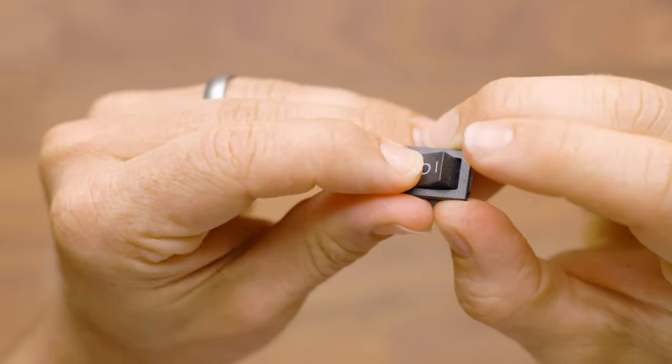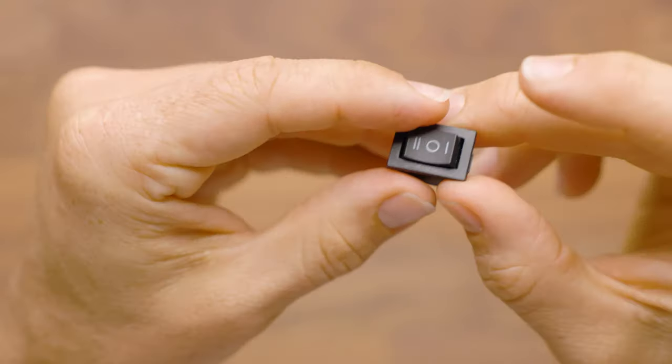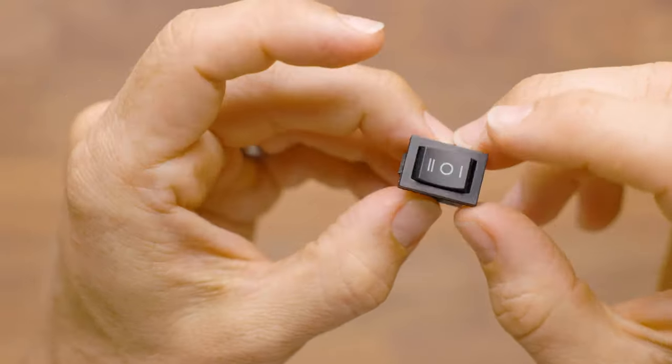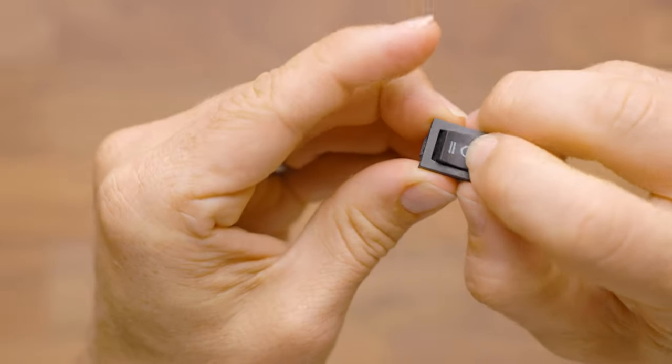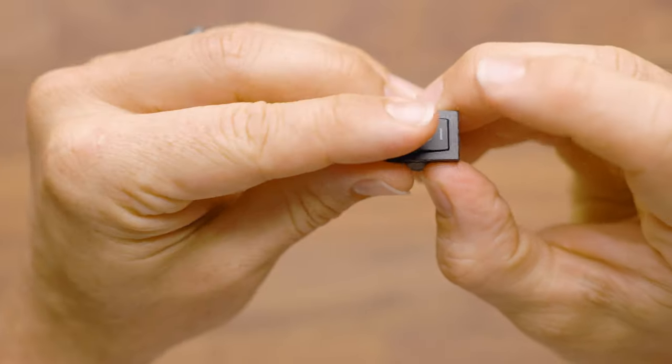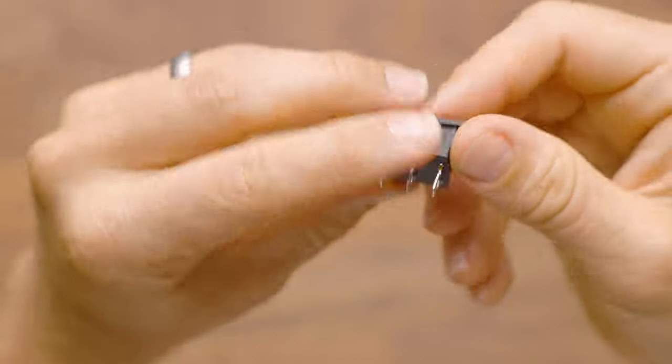So you essentially have three different positions, and this can be used with an Arduino or a Narfduino or one of our smart boards in the future to actually have fire control. You could make this single, burst, and full-auto if you wanted to.